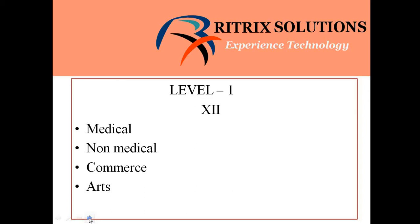In Plus Two you can take any of the following disciplines in order to come into the computer science field: medical, non-medical, commerce, or arts. Having maths or computer science at Plus Two level gives you an edge in graduation, but that is not compulsory. So if you do not have maths or computer subject in Plus Two, you can still do graduation in computer science.